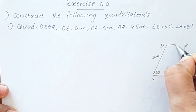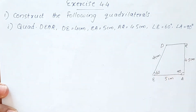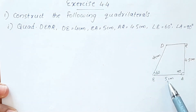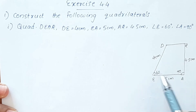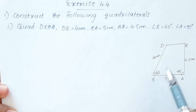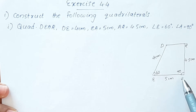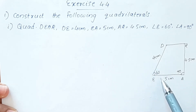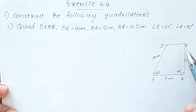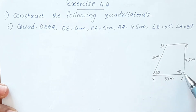The angles are the included angles. DE and EA — two sides are included and the angles are the angles of the figure. AR and EA are also included.